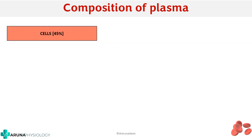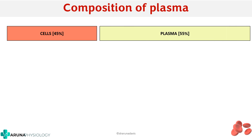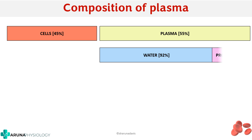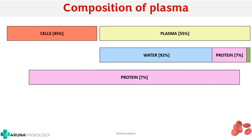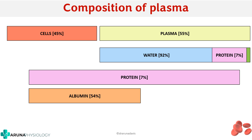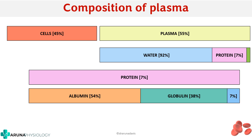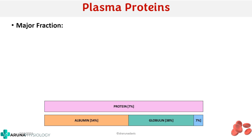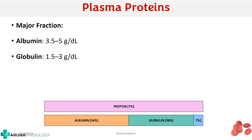Our plasma basically — around 45% of our blood contains cells and the rest 55% is plasma. Inside the plasma we have 92% water and the rest 7% is proteins, with a small percentage of other substances. That 7% protein consists of albumin (around 54%), globulin (around 38%), and the rest is other proteins. The normal values are: albumin 3.5–5 g/dL, globulin 1.5–3 g/dL, and fibrinogen 0.3 g/dL.